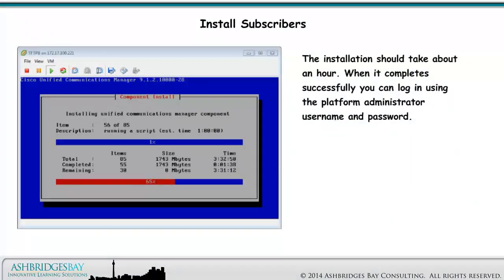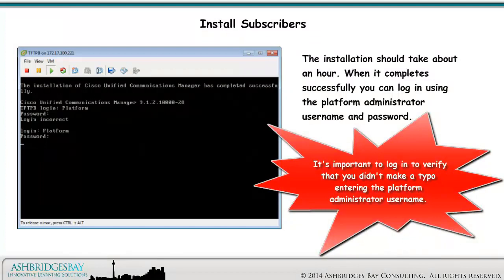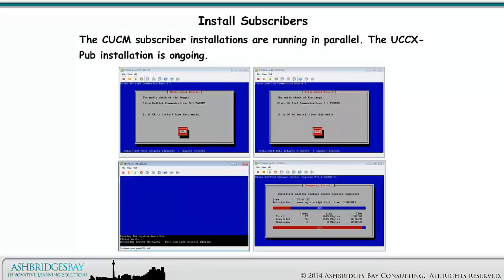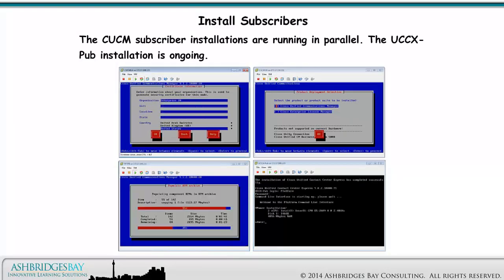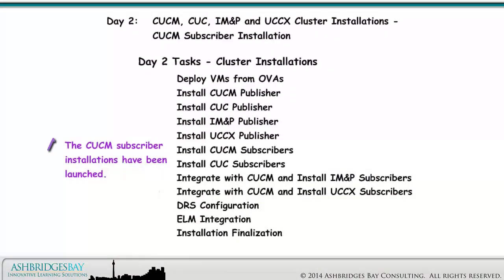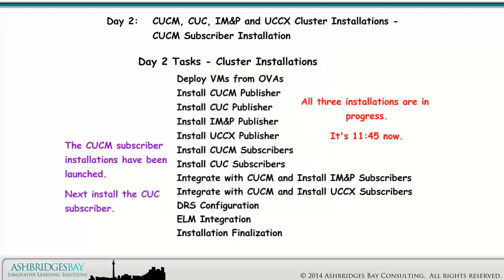The installation should take about an hour. When it completes successfully, you can log in using the platform administrator username and password. It's important to log in to verify that you didn't make a typo entering the platform administrator username. The CUCM subscriber installations are running in parallel. The UCCXPUB installation is ongoing. The CUCM subscriber installations have been launched — all three installations are in progress. It's 11:45 now. Next, we will install the CUC subscriber.